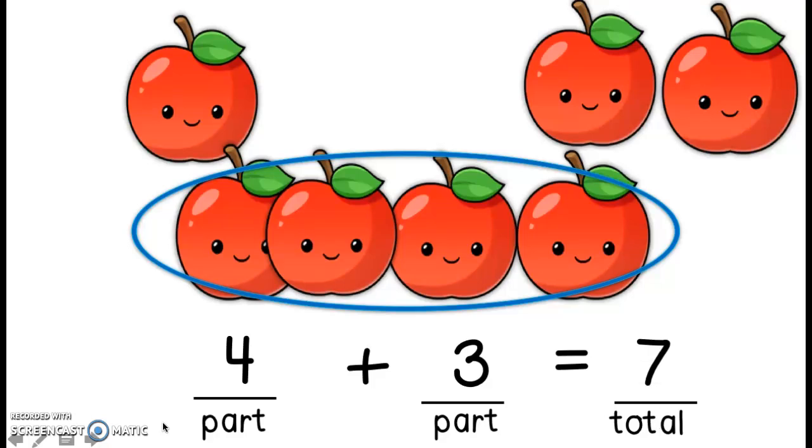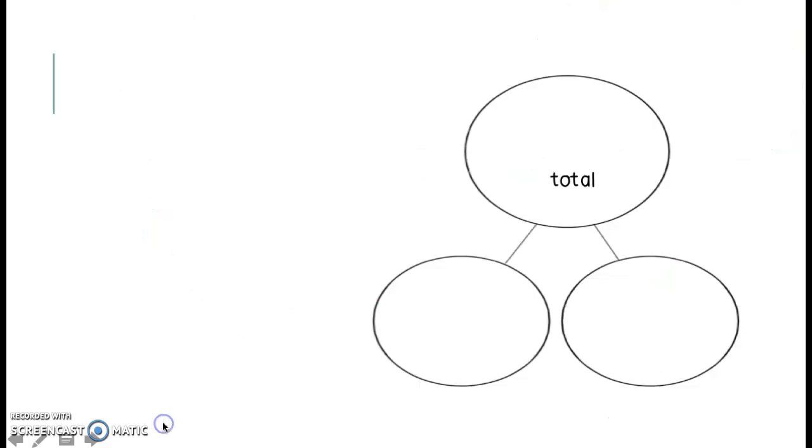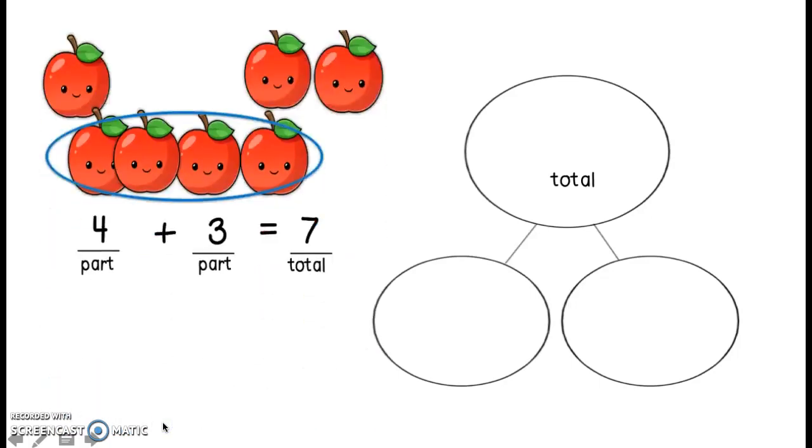Now I remember from yesterday, a number bond has three different pieces to it. It has the whole amount and the two parts. I see in my number sentence at the bottom, four plus three equals seven, and I already have my three pieces. I just need to remember where to put them. There is my number bond, and I gave you a hint already. The total is going to go on the top. So I'm going to go ahead and fill in one of the parts.